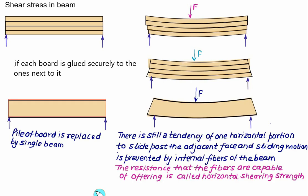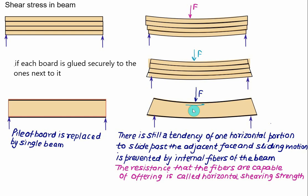Instead of a pile of boards, consider one single beam. This beam has an infinite number of internal fibers. When no load is applied the beam is horizontal, but when the load is applied at the center it will flex. There is a tendency for one horizontal portion to slide over the other. The bottom fiber opposes this motion, and in this fashion shear is continuously developed between each adjacent layer.